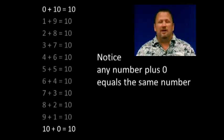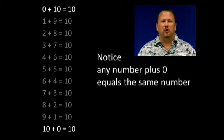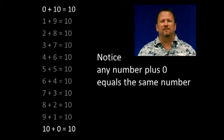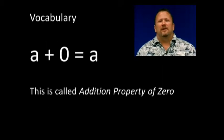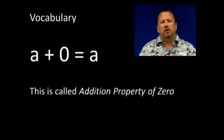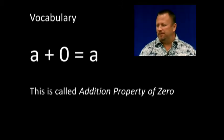Notice any number plus 0 is equal to the same number. 0 plus 10 is equal to 10. 10 plus 0 is equal to 10. So this is called the addition property of 0. Any number A plus 0 is still the same number.